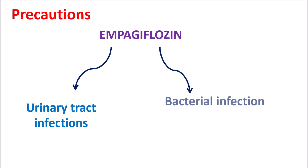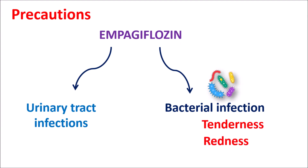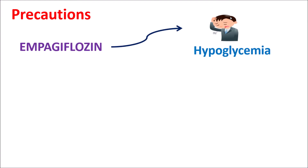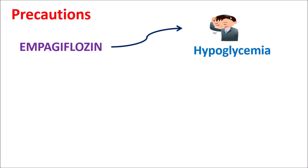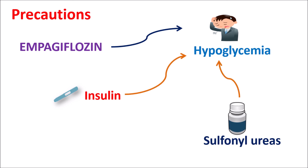Empagliflozin can also produce bacterial infections, particularly at the genitalia, causing tenderness, redness, and even fever. Finally, this medication can also produce hypoglycemia, commonly observed with many anti-diabetic agents. If insulin is combined with empagliflozin, hypoglycemia is more pronounced. Sulfonylureas can also increase hypoglycemia, so when sulfonylureas are combined with empagliflozin, the dose of sulfonylureas should be reduced to avoid severe hypoglycemia.